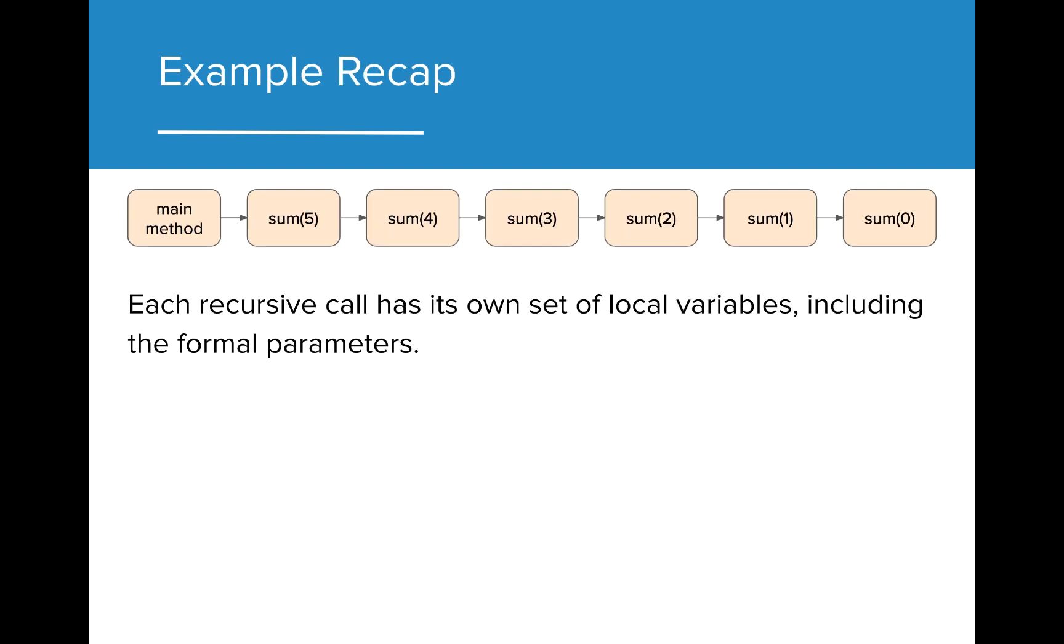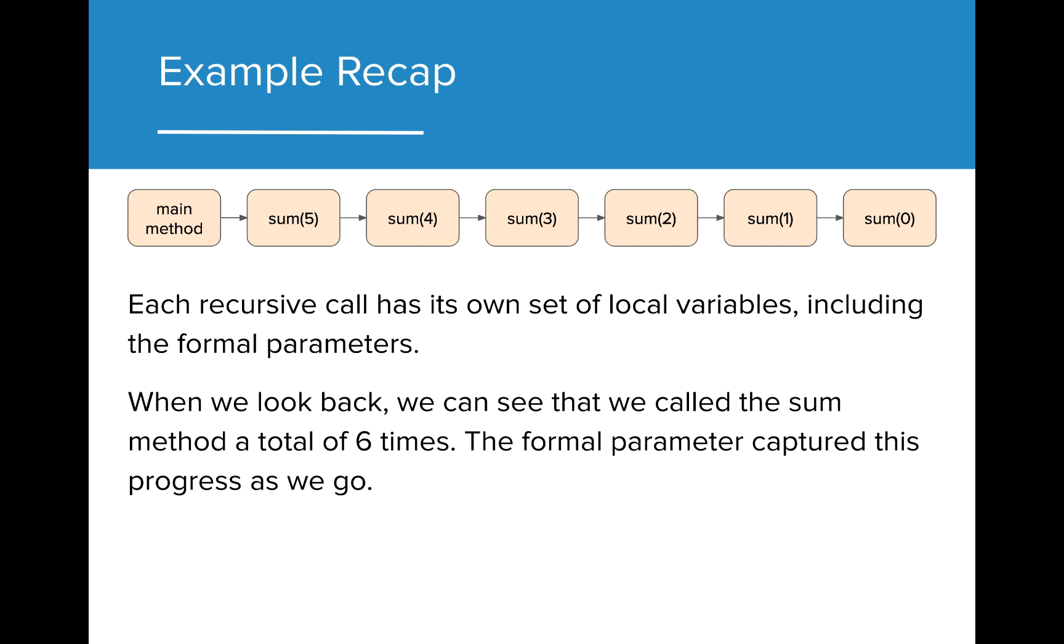Let's recap this example. Remember each time we call our recursive method, its own set of local variables are created. When we look back, we can see that the sum method was called a total of 6 times. Our progress was tracked by the formal parameter as we went through the different calls. In the end, we are able to accomplish the same task as our for loop that we saw earlier.